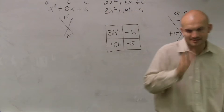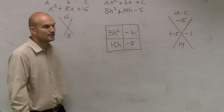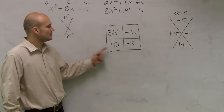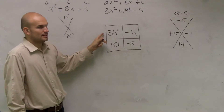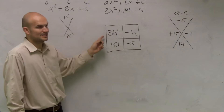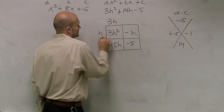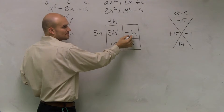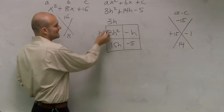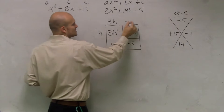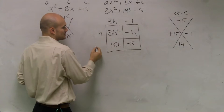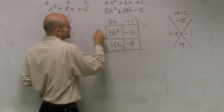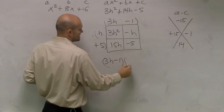Now what I need to look at: what numbers multiply to give me 3H²? 3H on top and H on the side. H goes into negative H, but 3H does not go into negative H, so I use H. H times 3H is 3H². H times negative H is negative 1. 3H times what gives you 15H? Positive 5. Check: 5 times negative 1 gives negative 5. So my answer is these two binomials: (3H − 1)(H + 5).